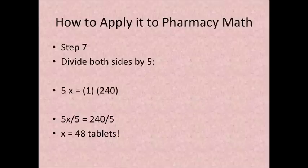Step 7. Divide both sides by 5. So 5x divided by 5 is equal to x and then 240 divided by 5 is equal to 48 tablets. So you have that you need 48 tablets of the 5 milligram tablet prednisone.